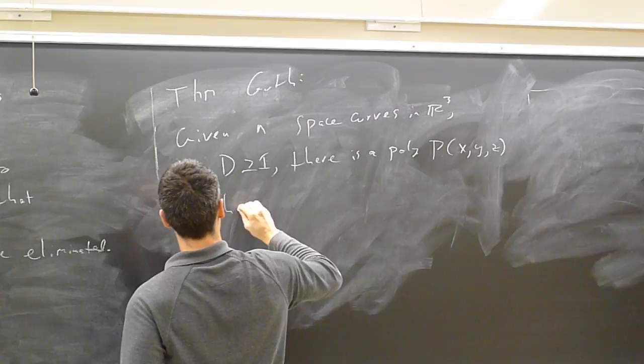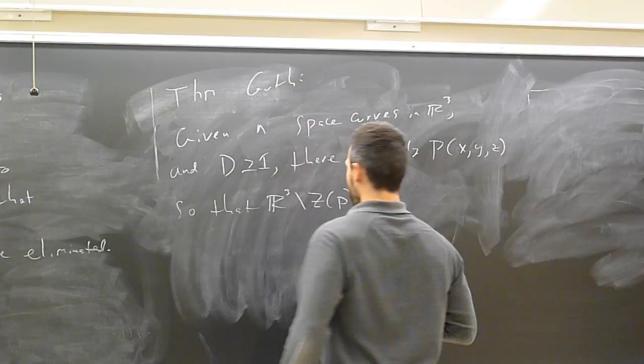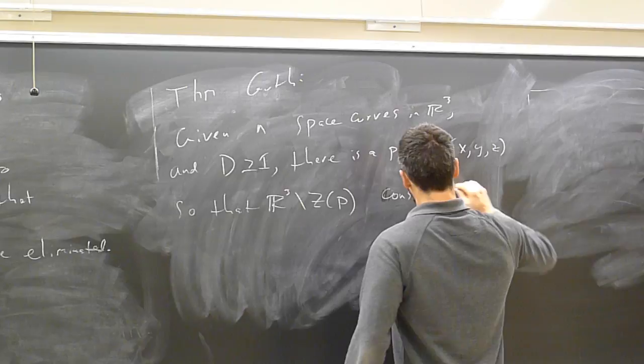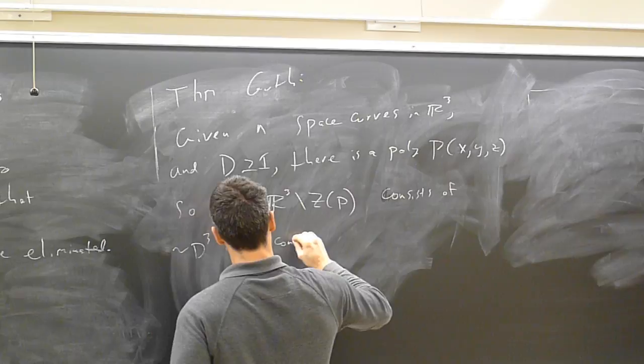So I'll say, given n space curves, and so these are algebraic space curves of degree d, we don't really care about d's in R³, and a number of big D bigger than or equal to 1. So there's a polynomial in three variables, so that the zero set, so that zero set is closed. The complement is open. It's a collection of open connected sets. So it consists of, well, about D cubed, open connected sets.